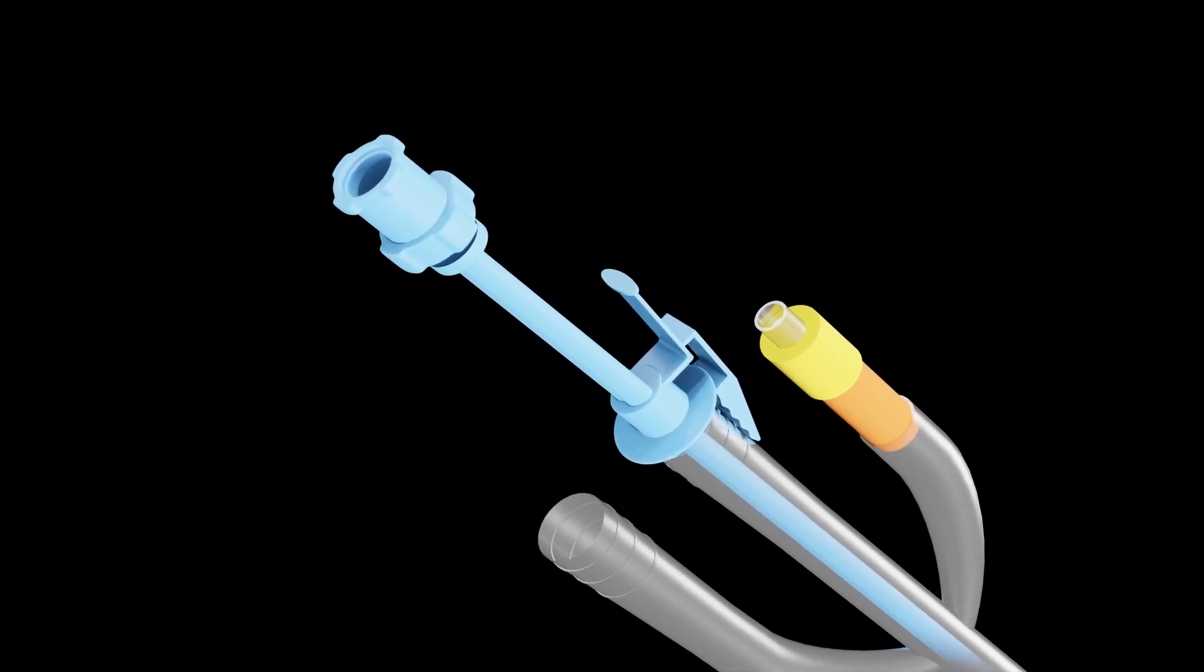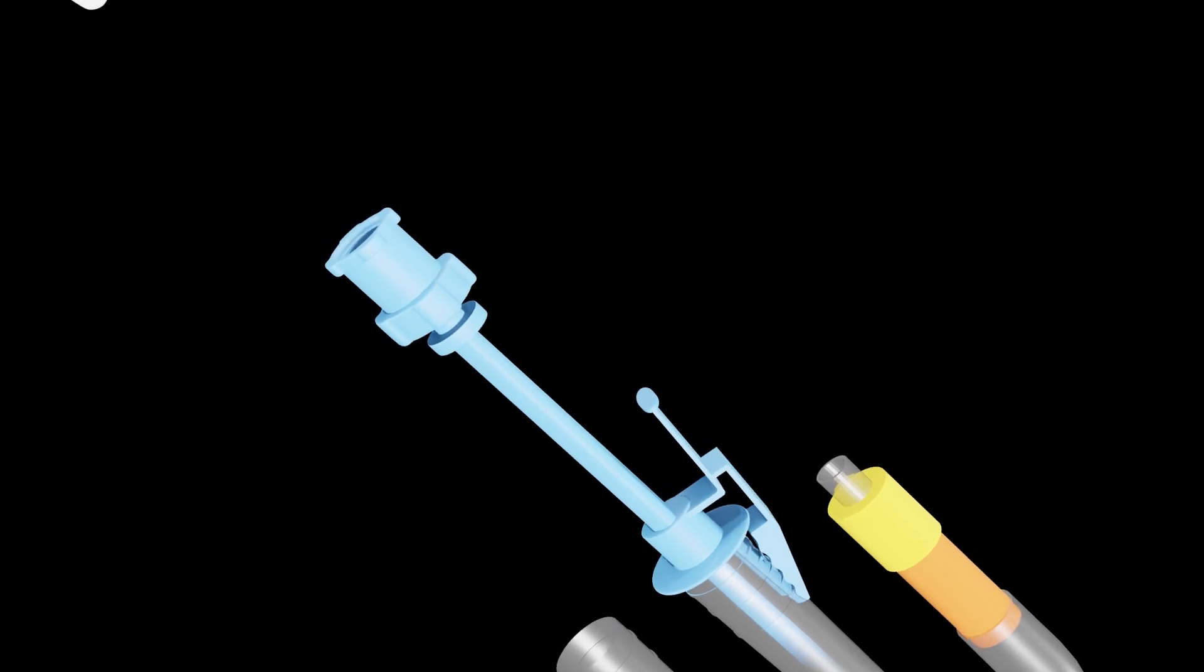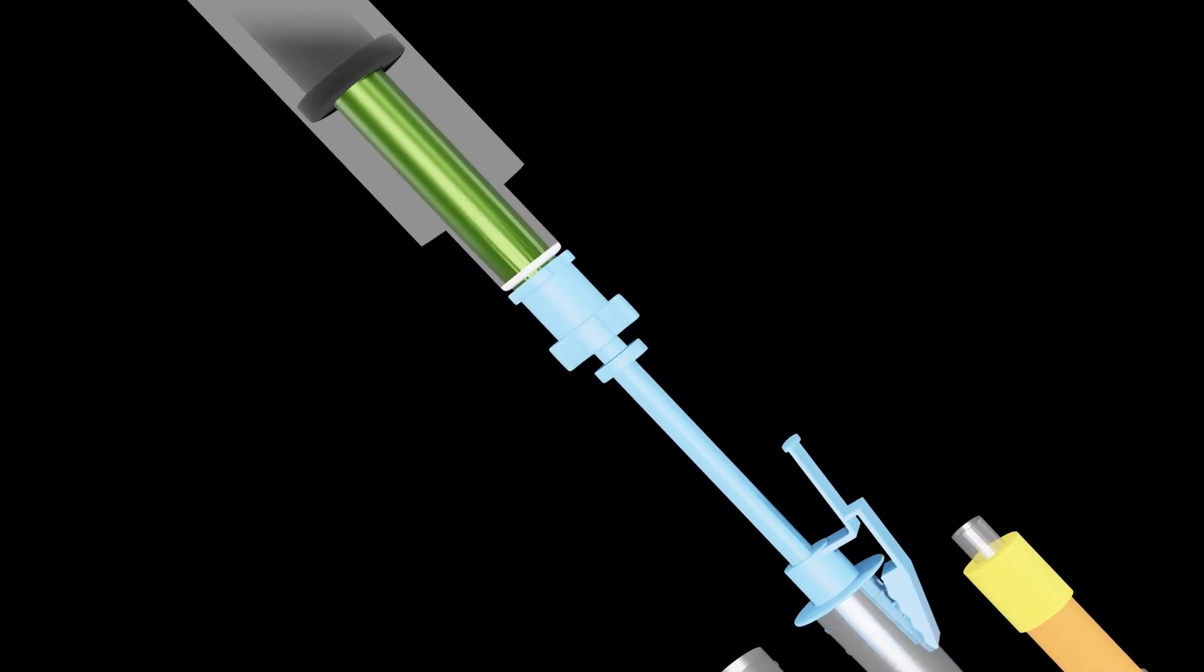When the sheath is inserted and locked into place within the catheter, a hemostatic flowable agent can then be injected through the sheath.